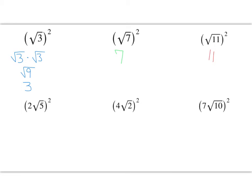What if I have something like 2√5 and I'm squaring it? We know that this is a product — this is 2 times the square root of 5, all squared — which means 2√5 times 2√5. I can put the numbers in front of the radicals together and the radicals together. So 2 times 2 is 4, and the square root of 5 times the square root of 5 is the square root of 25, which is 5. So this is 4 times 5, which is 20.